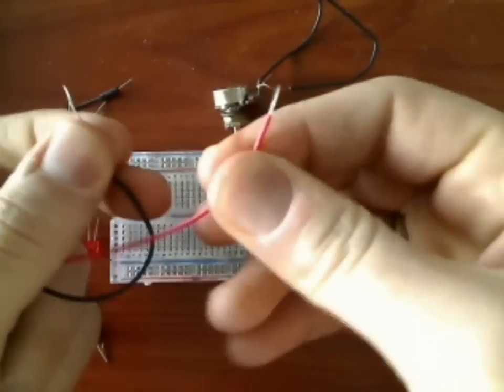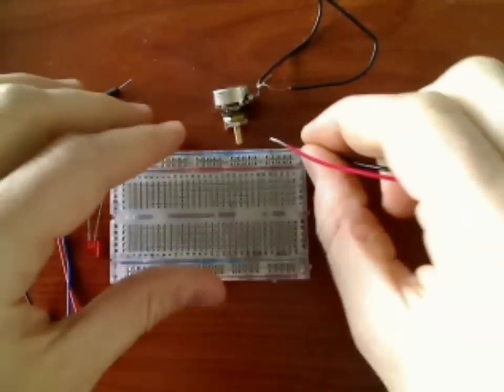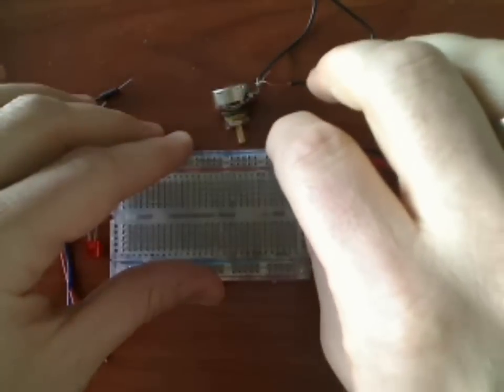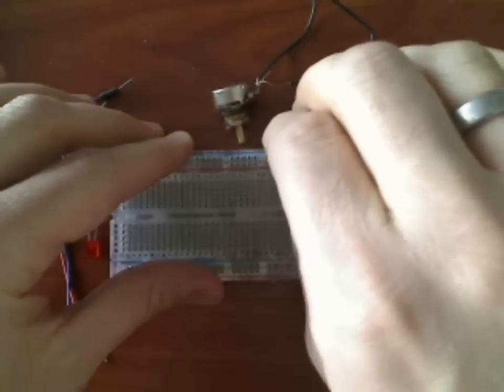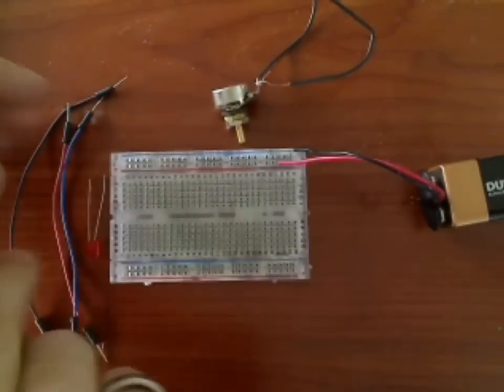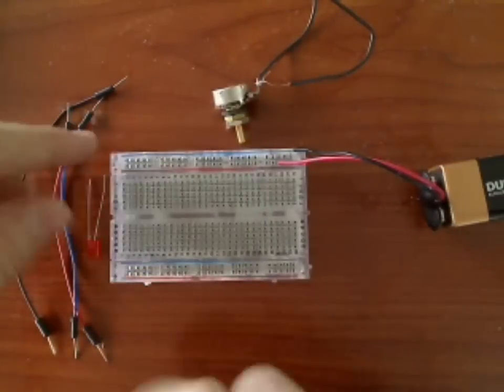So I've got my positive, negative black. Put the negative in the top row, positive in the row just below it. So now this whole top row is ground. This whole second row is our positive voltage.